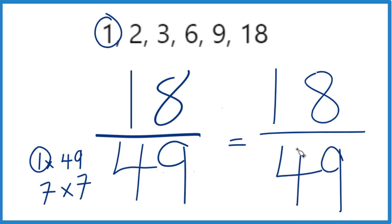You can see nothing's changed. And so because of that, we say that 18/49, that's already simplified. We can't reduce this down any further. It's in lowest terms.